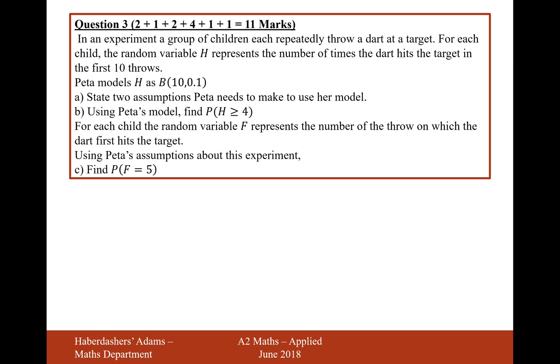So the probability of each trial is constant and that each throw of the dart is independent from the previous throws. So it's constant probability. And the second one is independence of throws, independence between each throw.